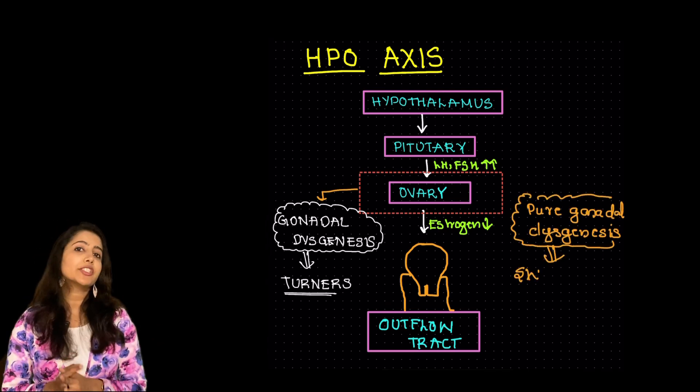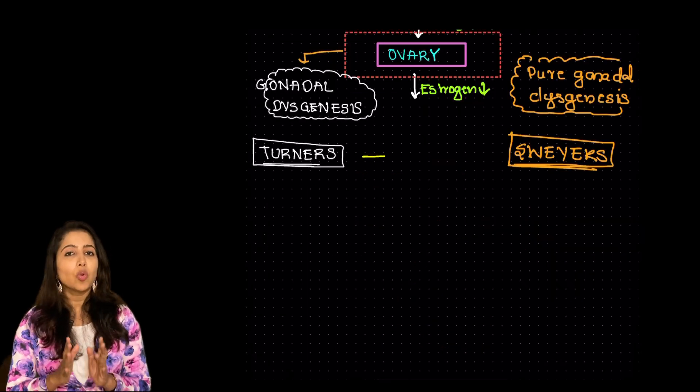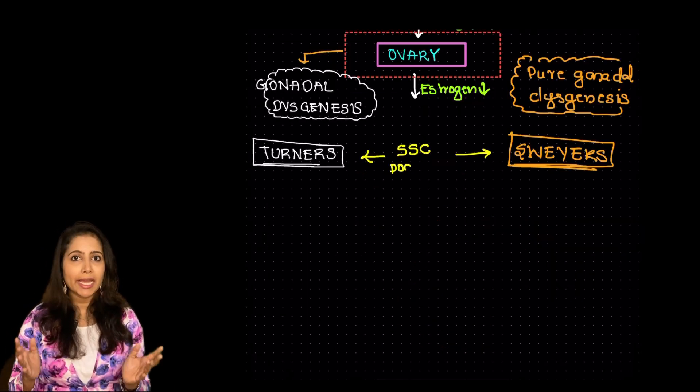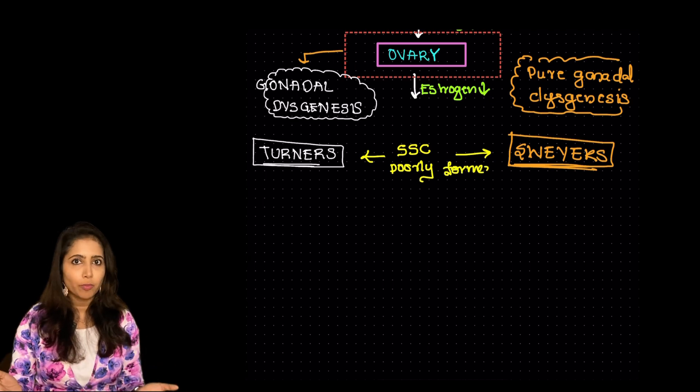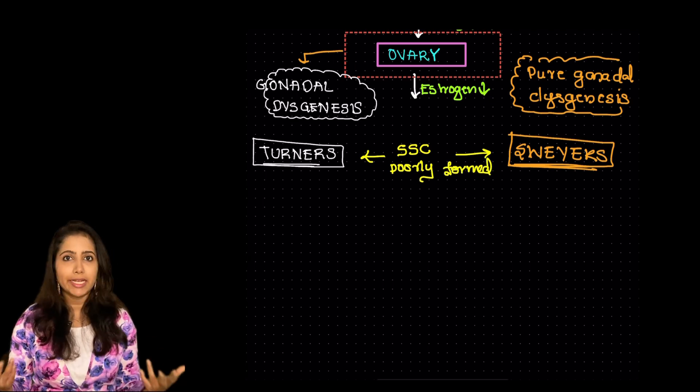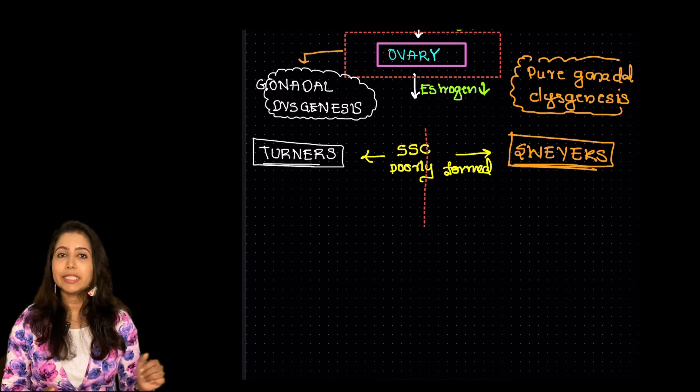Let's see how to differentiate both of these. So in this case the secondary sexual characters are not well formed because the hormones are less in this. Let's see the details.